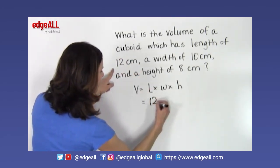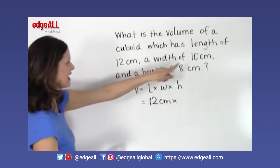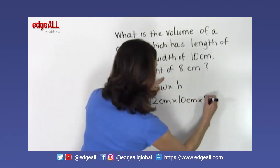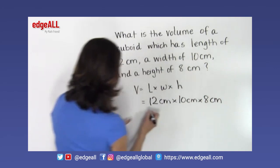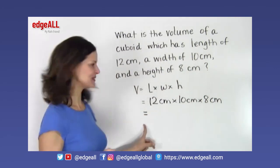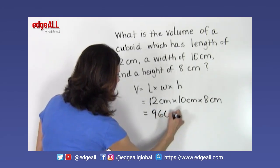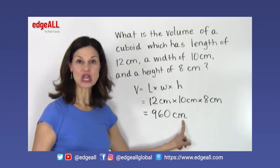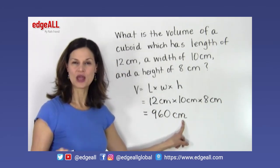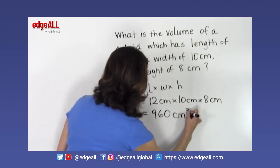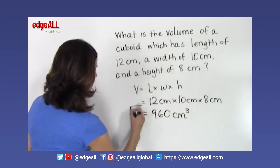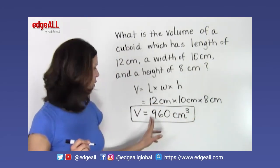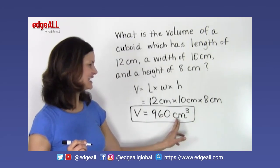So we are going to take the length of 12 centimeters, multiply that by 10 centimeters, and multiply that by 8 centimeters. So 12 times 10 times 8 equals 960. Now I want to be careful that I make sure and put my units of measure correctly in volume form, which is going to be cubed to the third power here. So volume equals 960 cubic centimeters, or 960 centimeters cubed.